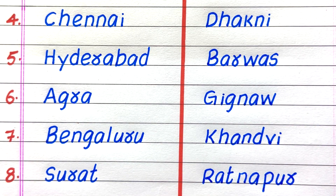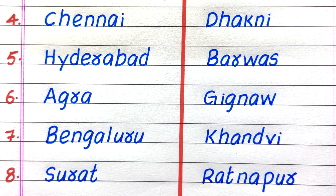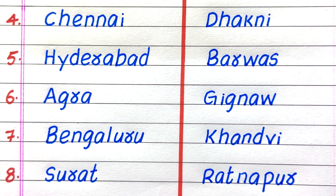The 4th city in India is Chennai, 5th Hyderabad, 6th Agra, 7th Bengaluru, 8th Surat. The 4th village in India is Dhakni, 5th Barwas, 6th Jignau, 7th Kandvi, 8th Ratnapur.